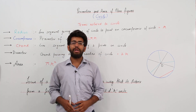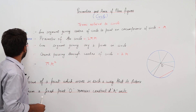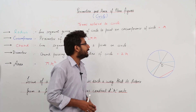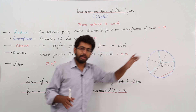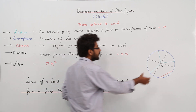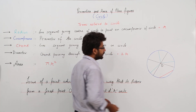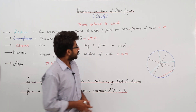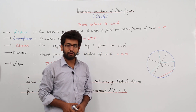The distance of each and every point on the boundary of the circle from the center is R units, which is known as the radius. The radius is a line segment joining the center of the circle to a point on the circumference, and its value is R. In this diagram, the green colored part is the radius.